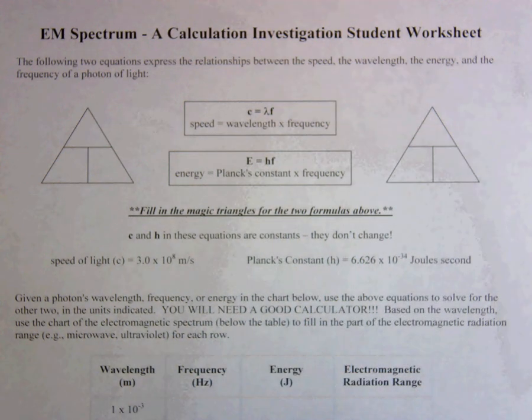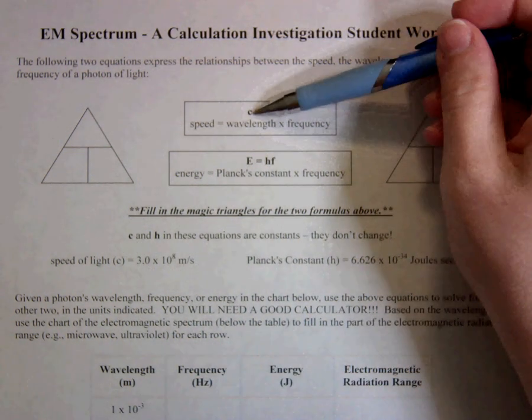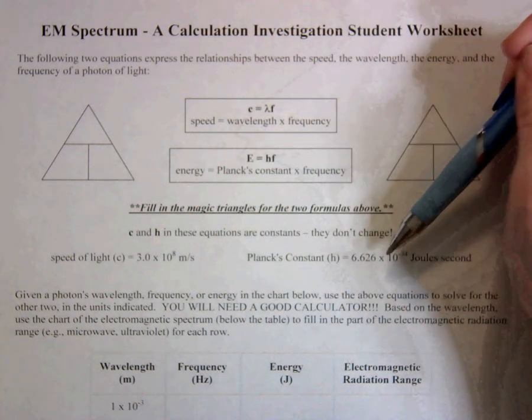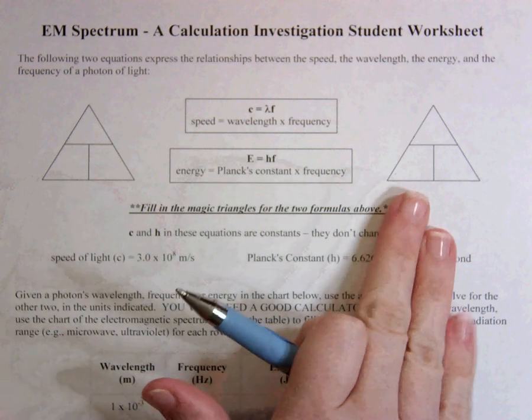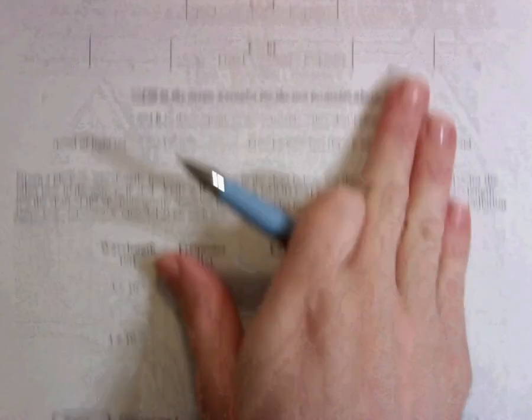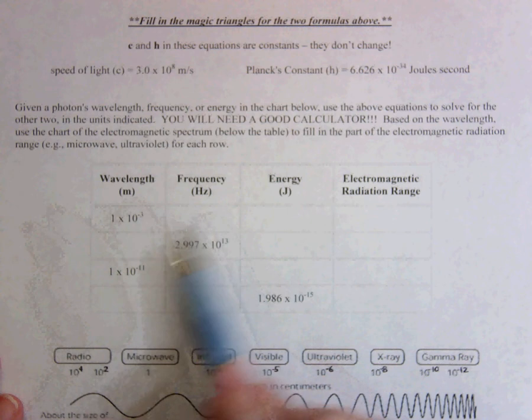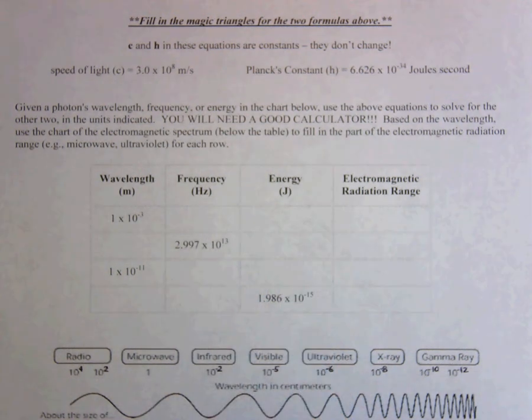So any time that you're doing the math for these problems and you need a number for c, it's right here. If you need the number for h, it's right here. So you'll have your formulas written out in the magic triangles, and then you're going to go down here and fill in the blanks in this data table with the numbers that you calculate using those formulas up above.